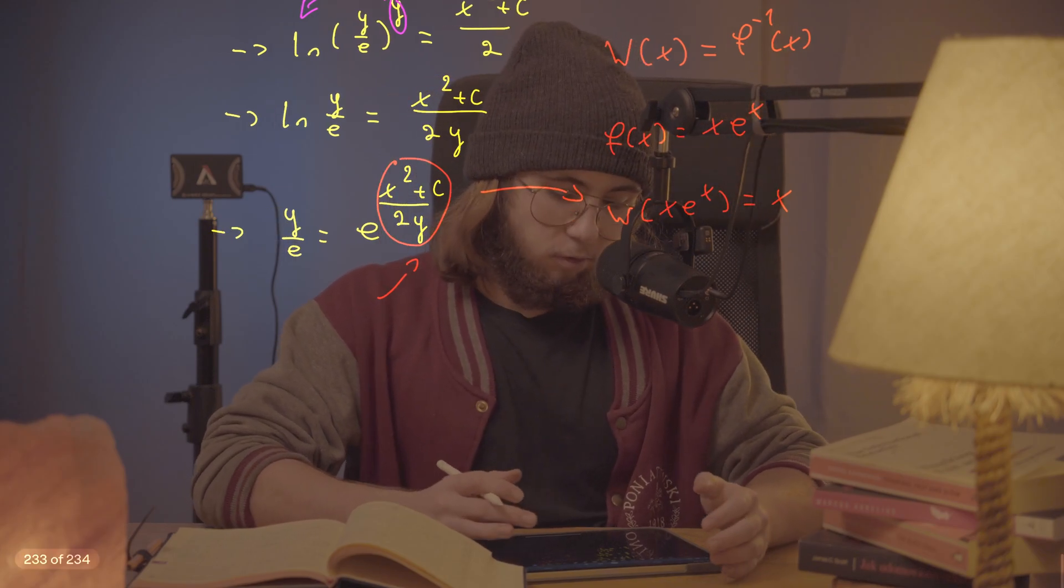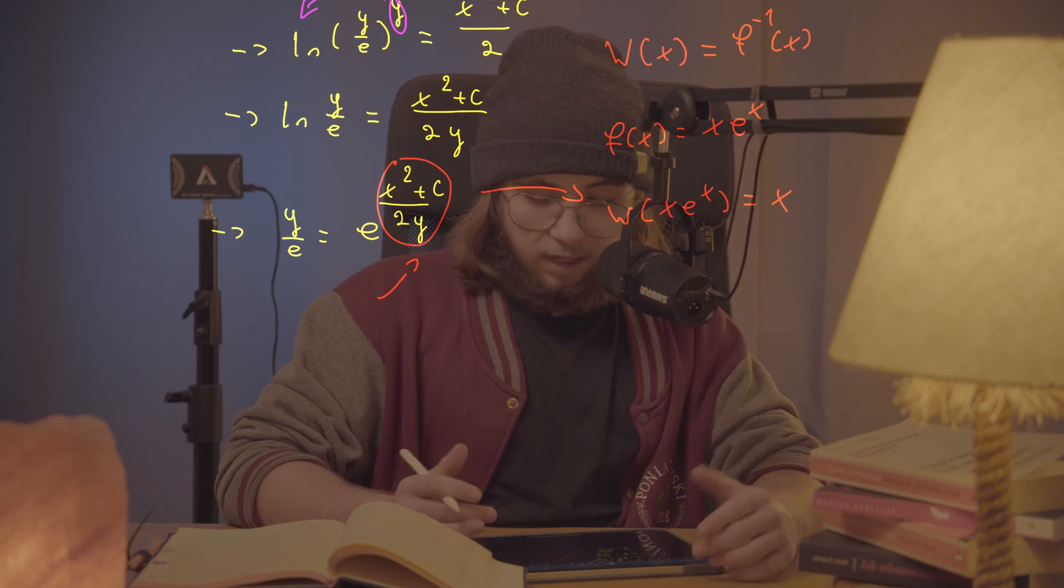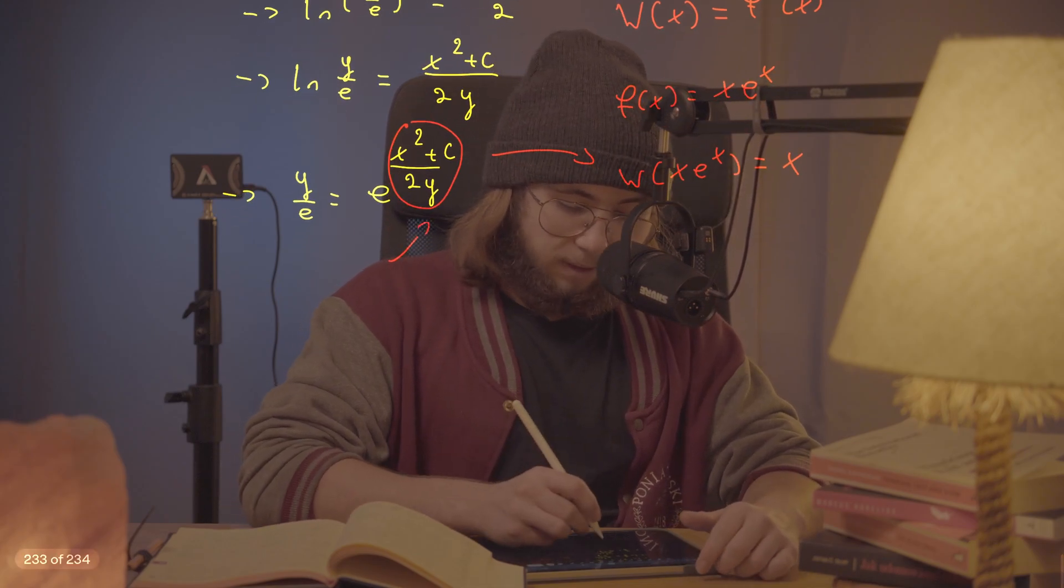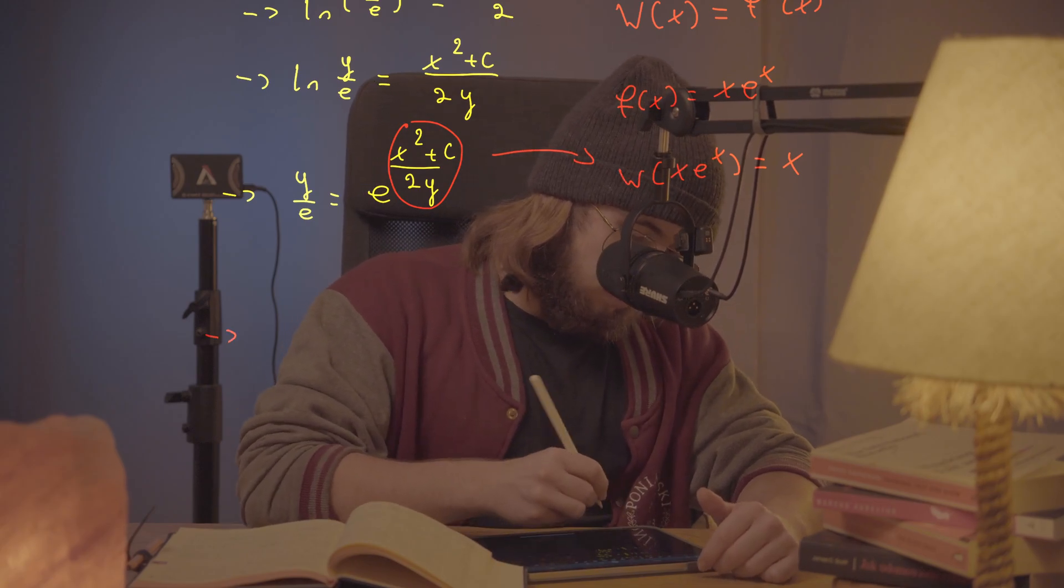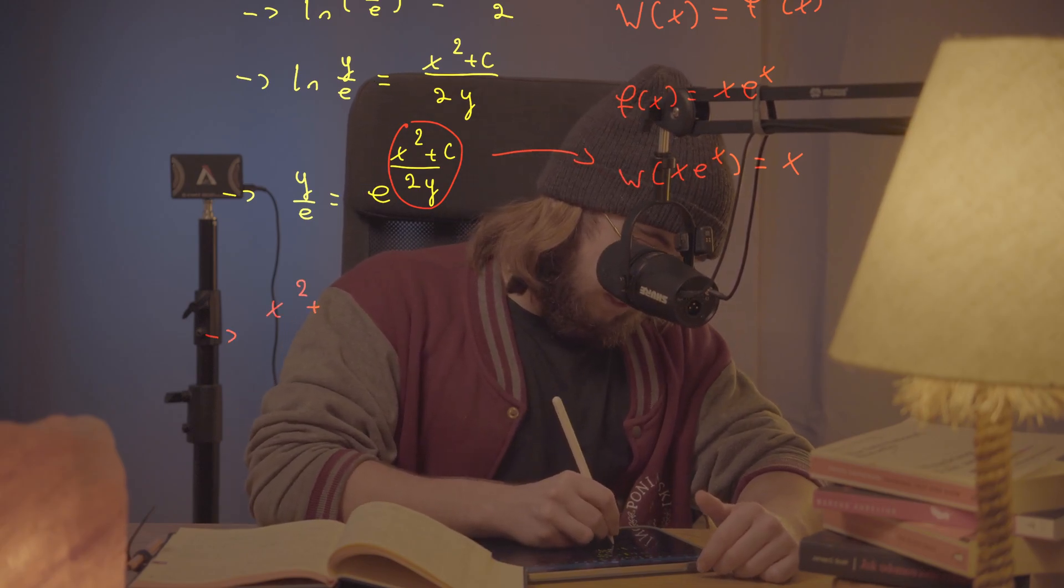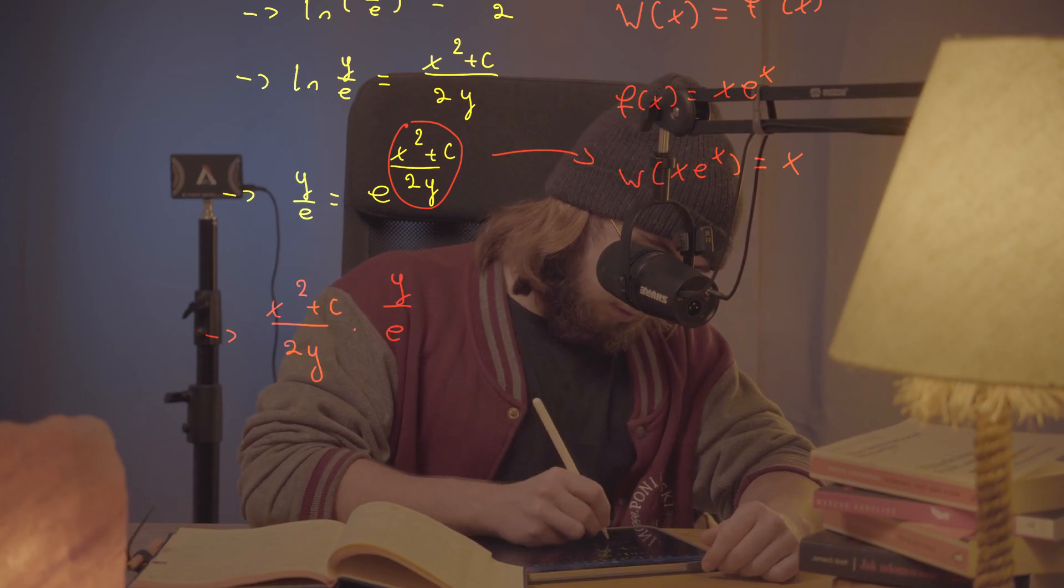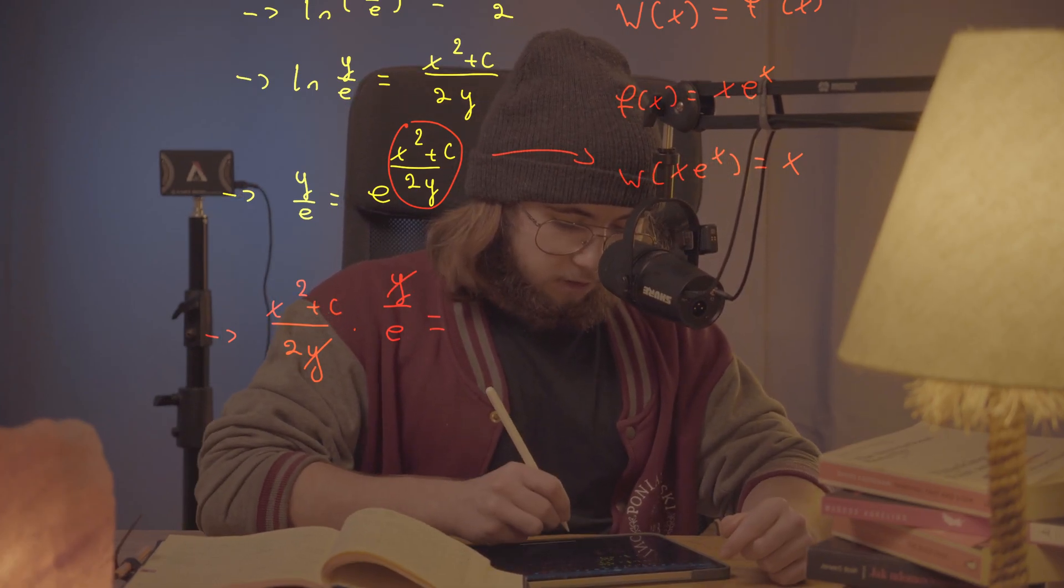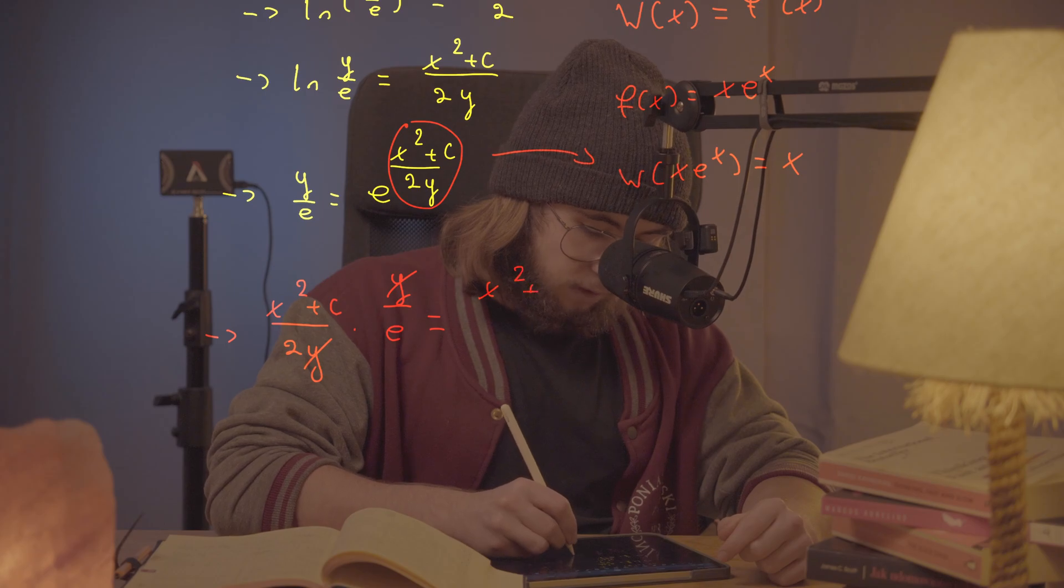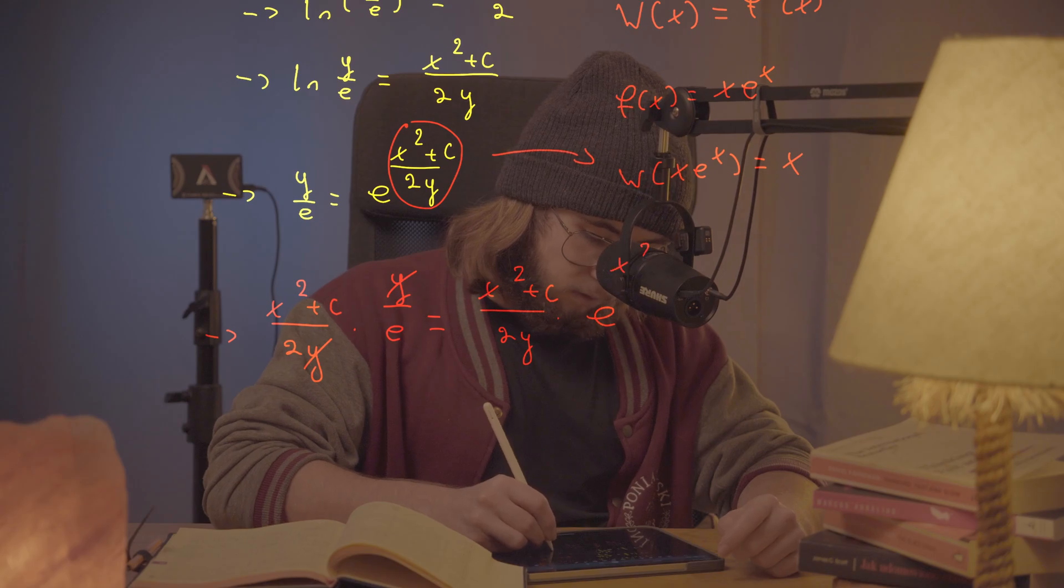So, what do I do here in order to be able to use my Lambert W function? Well, I have to multiply both sides through by what I'm exponentiating e to the power of on the right-hand side. So I will just have to multiply everything through by (x squared plus c)/(2y) on the left-hand side. Well, actually, those y's are going to cancel each other nicely. I love it, honestly. And on the right-hand side, I'm going to get (x squared plus c)/(2y) multiplied by e^((x squared plus c)/(2y)).